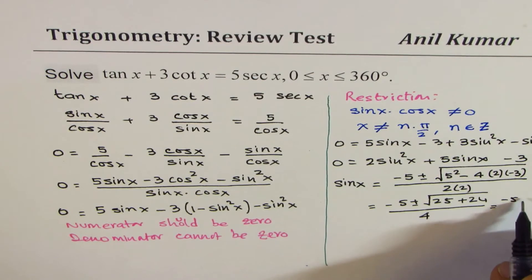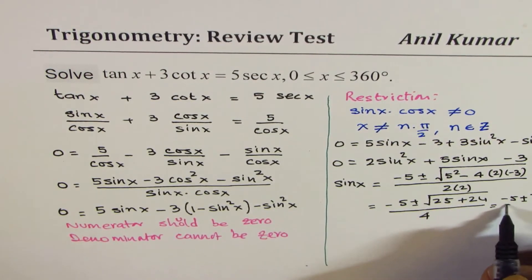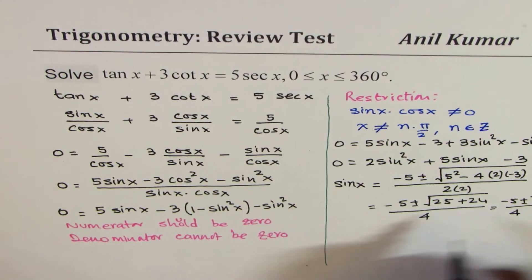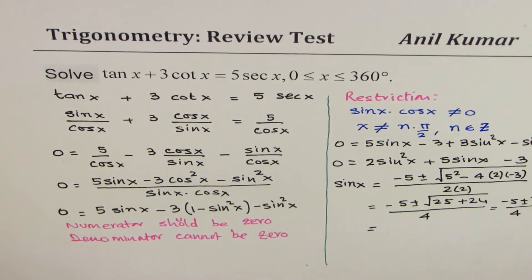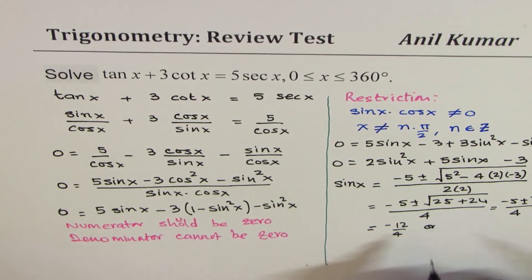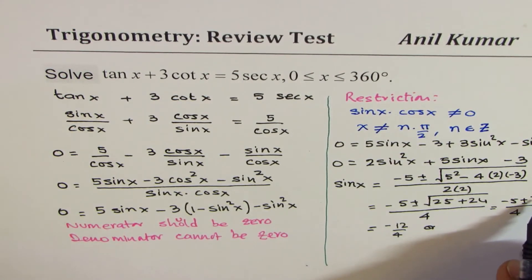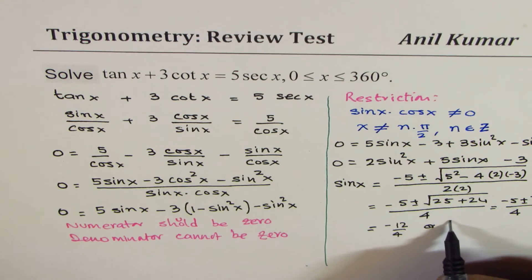Now that is minus 5, plus minus, this is 49, square root of 49 is 7, divided by 4. So what you get here is that the sine x could have two values. Now one of them will be negative 12 over 4. The other one is, when you take away minus 5 from 7, you have 2 over 4.